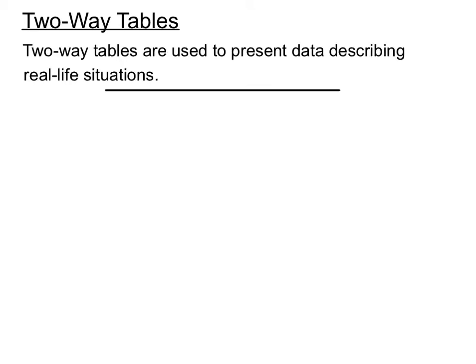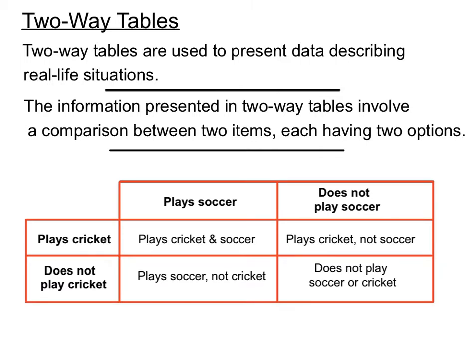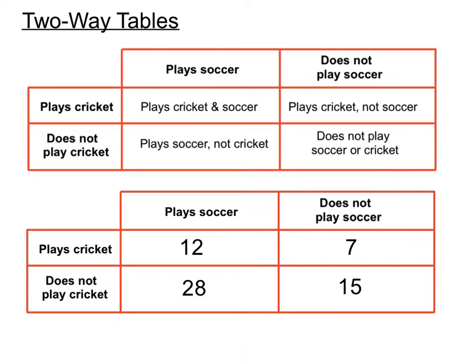Two-way tables are used to present data describing real-life situations mostly. The information presented involves a comparison between two items, each of them having two different options. In the example we have here, this creates an intersection of maybe four different categories that people are in, and we have a certain number of people who fit those.